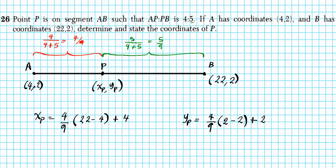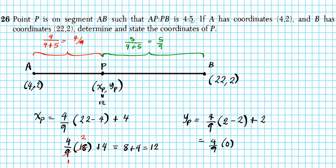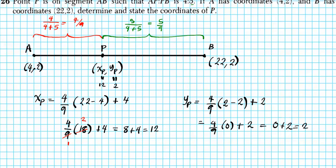Let's simplify: (4/9)(18) + 4 = 8 + 4 = 12. The y-coordinate: (4/9)(0) + 2 = 2. We're not surprised since this is a horizontal line. So the coordinates of point P are (12, 2).